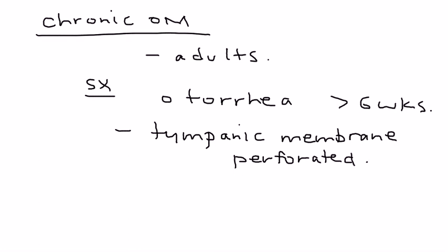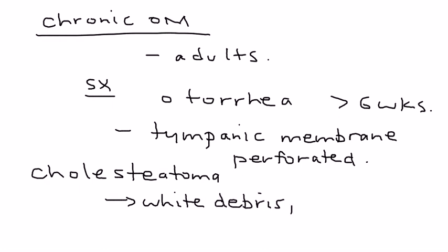Now, the one thing that's very significant that can occur with chronic otitis media is the development of something called cholesteatoma. And when this happens, what's essentially going on is that you have this white debris that's going to be detected on the physical exam. And also, there's a draining mass...